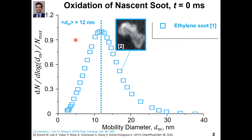For example, here you can see the normalized number concentration measured as a function of the mobility diameter of nascent soot nanoparticles produced by a premixed ethylene flame. The average mobility diameter of this size distribution is 12 nanometers, as these nascent soot nanoparticles make up compact aggregated structures.